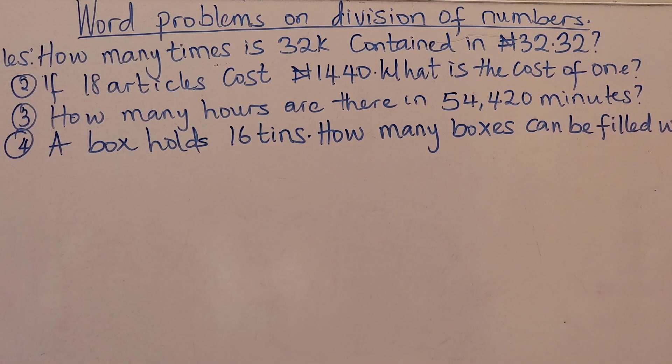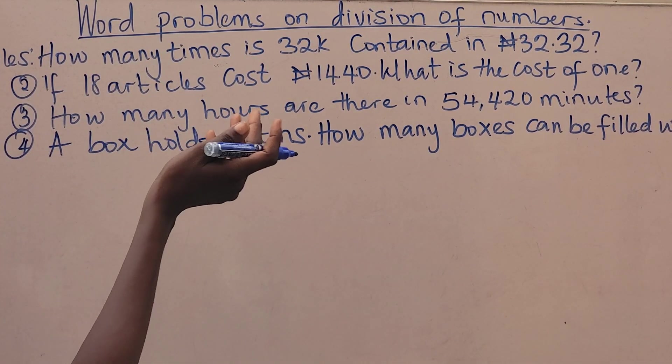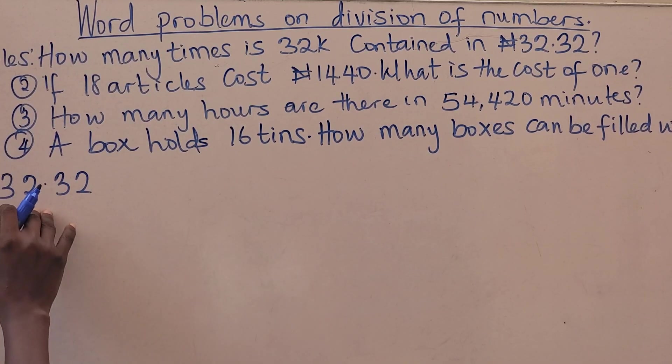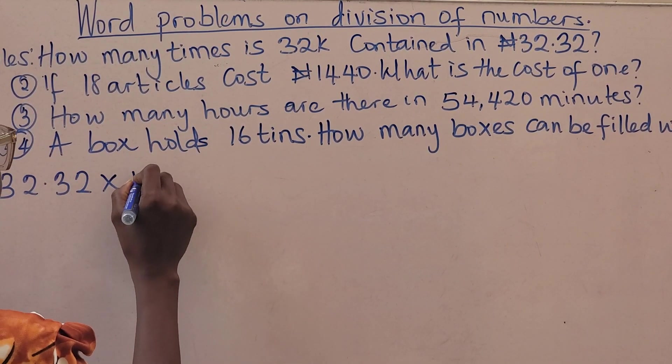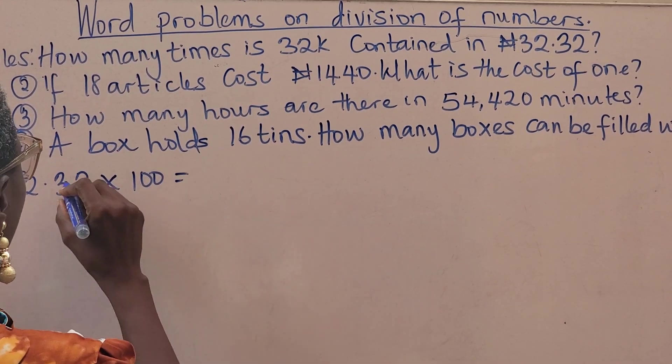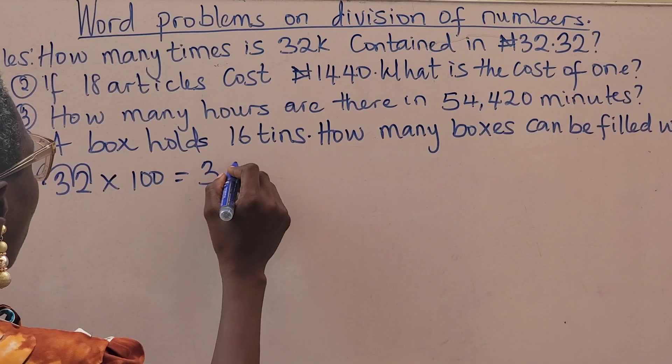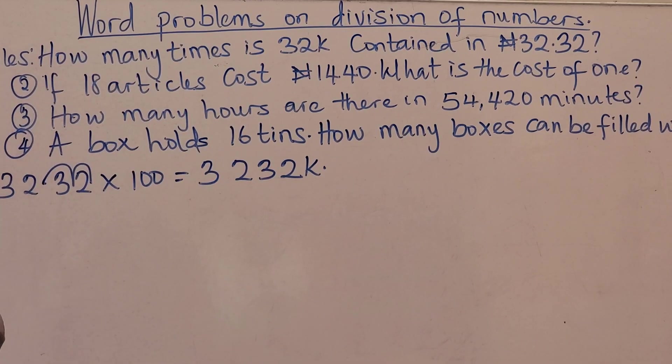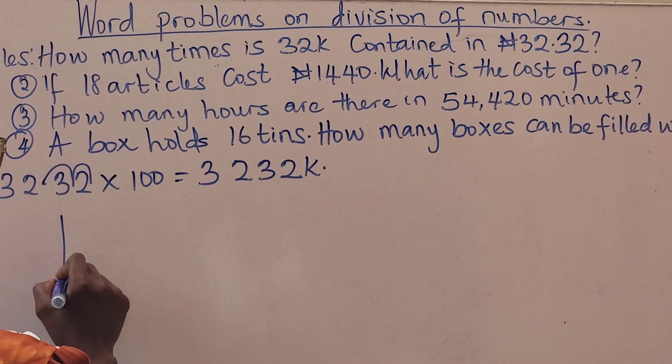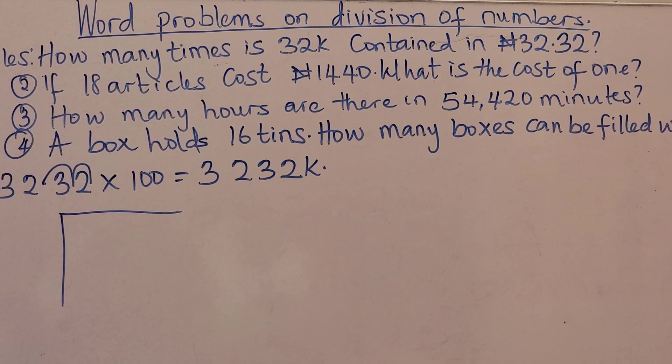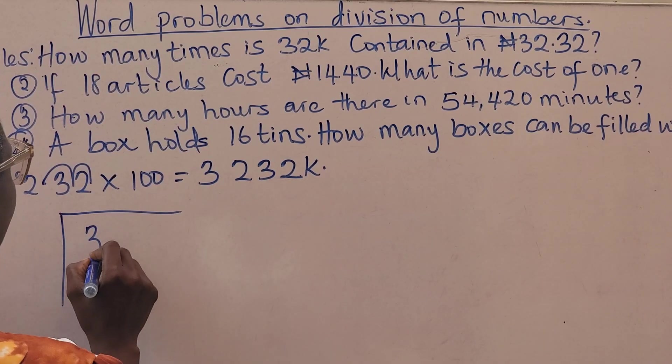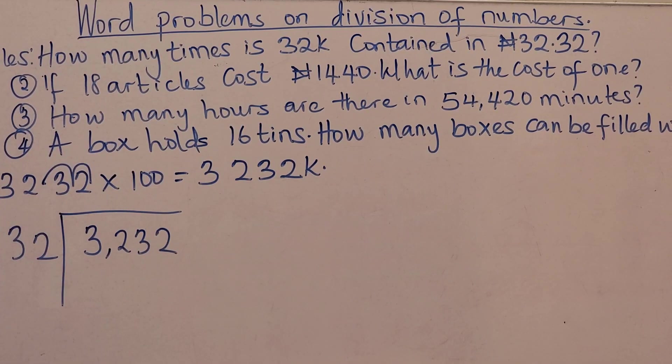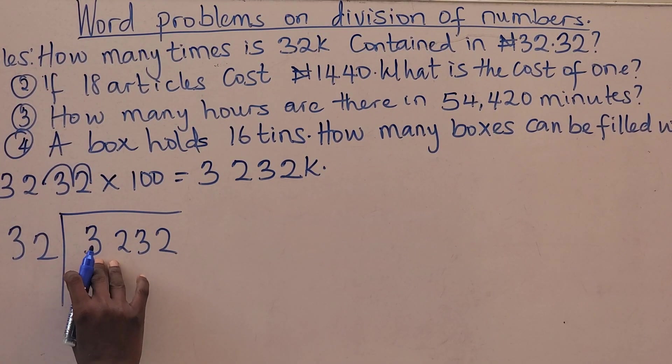So to convert from naira to kobo, 32 naira to kobo, I'll be multiplying by 100 and that's going to give me 3,232 kobo. So then if I have it that way I can divide. I'm going to be dividing 3,232 divided by 32.